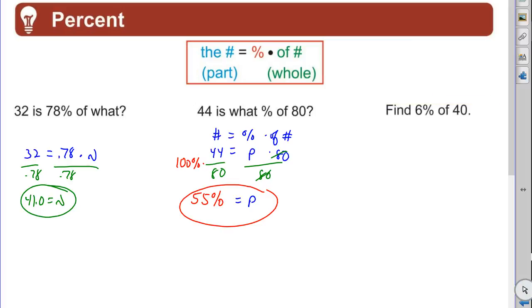Third possibility here. Find six percent of 40. So let's use my formula again here. Let's go ahead and see what we get. So find six percent of 40. Okay, of 40.